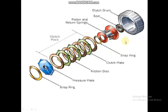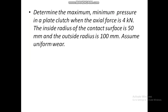Multiple disc clutches are designed to overcome the limitation of single plate clutches, which transmit less torque. In a multiple disc clutch, you can transmit large torque without increasing the clutch plate diameter — keeping it compact. They are mostly used in bikes. Now let's solve a question: determine the maximum and minimum pressure in a plate clutch when the axial force is 4 kN, inside radius is 50 mm, and outside radius is 100 mm, assuming uniform wear.